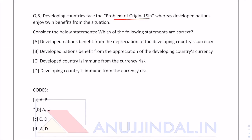Consider the below statements and find which are correct. First: developed nations benefit from the depreciation of the developing country's currency. Second: developed nations benefit from the appreciation of the developing country's currency. Third: developed countries are immune from currency risk. Fourth: developing countries are immune from currency risk.